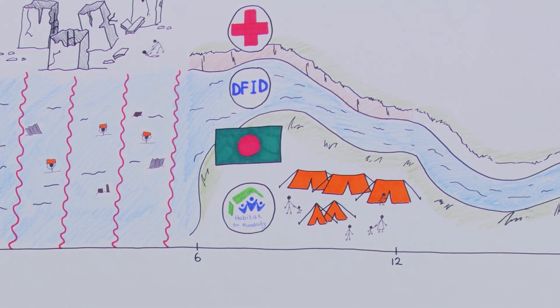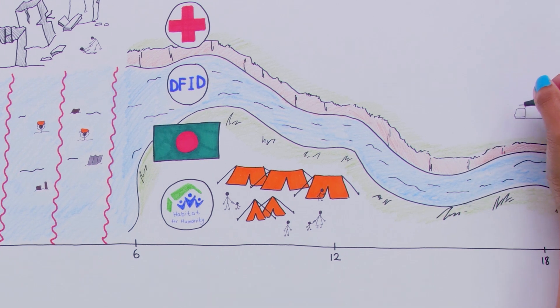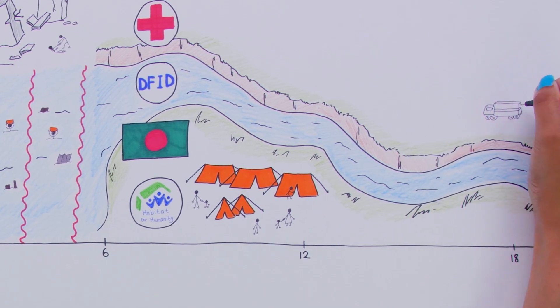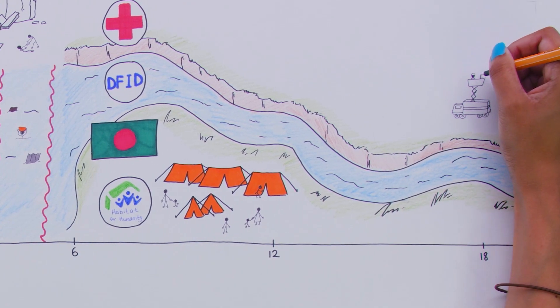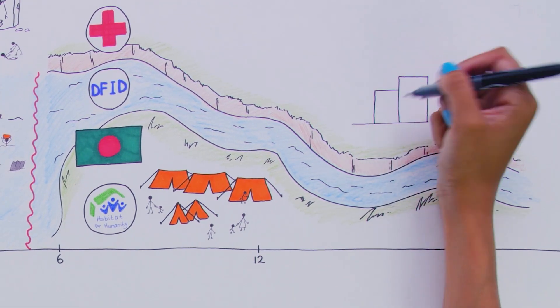One thing that was very important that we identified was that some 80% of the people in Dhaka are renters of housing, which means if their housing is damaged, their apartment or their house is damaged, then they're going to have a hard time finding another place to rent.